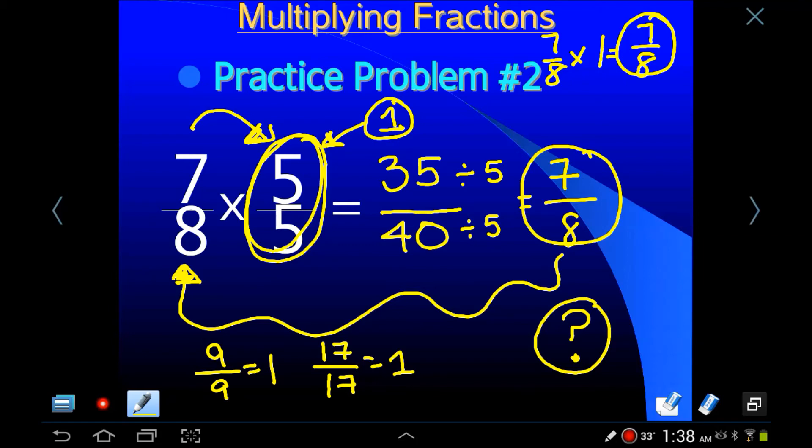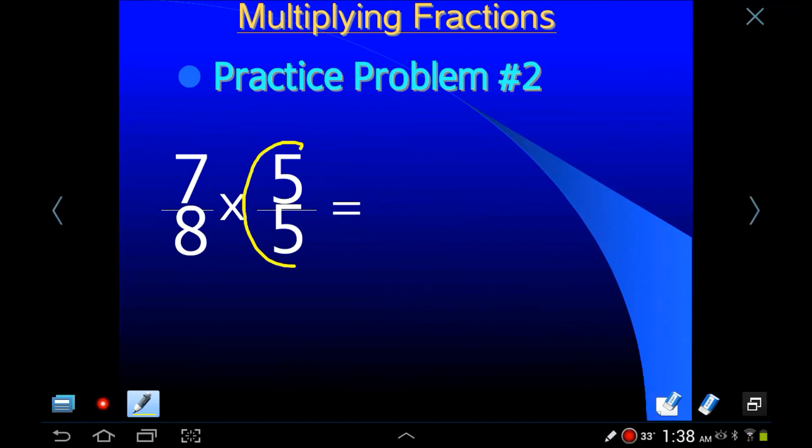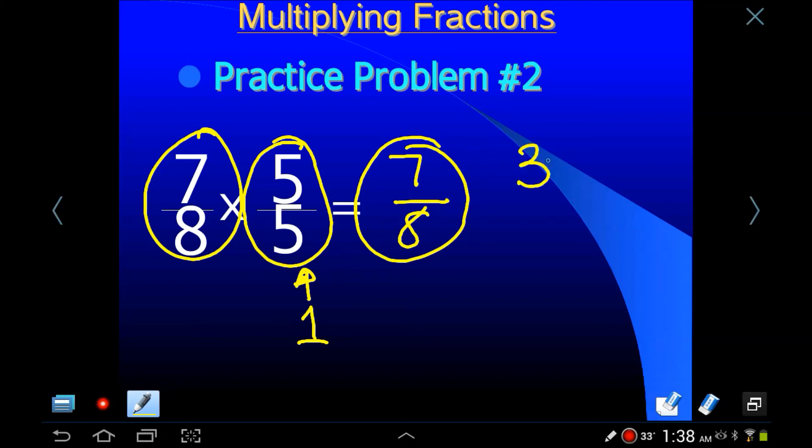So we could have went ahead and did the arithmetic, or like I said, some of you mathematicians out there who are clever, you might have looked at this and went, oh, this is 1. I'm not going to do anything else other than just write 7/8, because I know that anything times 1 is itself. So if you just wrote 7/8, great. Good for you. If you wrote 35/40 and then reduced it and got 7/8, anything wrong with that? No. Nothing is wrong with that at all.